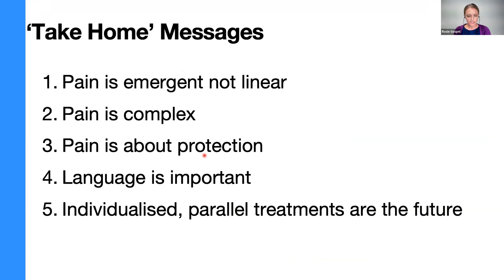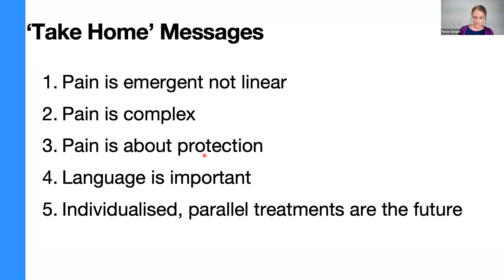Take-home messages: pain is emergent, not linear — it's more like pickup sticks than dominoes. Pain is complex but this complexity gives us many treatment avenues to pursue. Pain is about protection — picture the twin peaks model with the safety buffer zone that gets even bigger after injury. Pain is not an accurate measure of what is going on with the tissues of the body. Language is important — we can modify our language to hopefully be interpreted as less threatening. And individualized, parallel treatments are the future for treating persistent pain states.